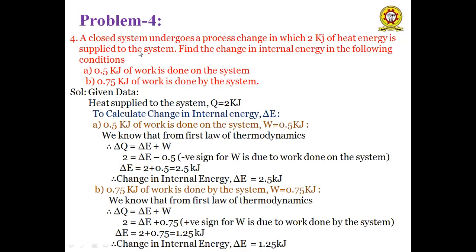Next problem: A closed system undergoes a process in which 2 kJ of heat transfer is supplied to the system. Find the change in internal energy under two conditions. Q = 2 kJ supplied to the system; we need to calculate ΔE for two work conditions.